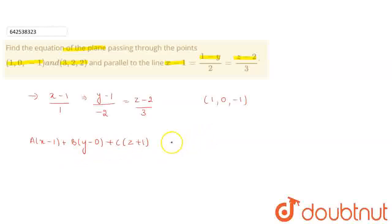So it will become a(3-1) plus b(2) plus c(2+1). That is equals to 0. So 2a plus 2b plus 3c is equals to 0 and this is the first equation.